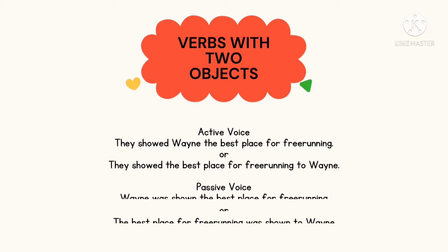Now let's read the two examples in the passive voice under 'verbs with two objects.' When a sentence in active voice has two objects, both objects can be used as subjects of the verb in the passive voice. The first example is more common — the indirect object in the active voice becomes the subject of the verb in the passive voice. You can refer to your textbook for additional notes on page 165.